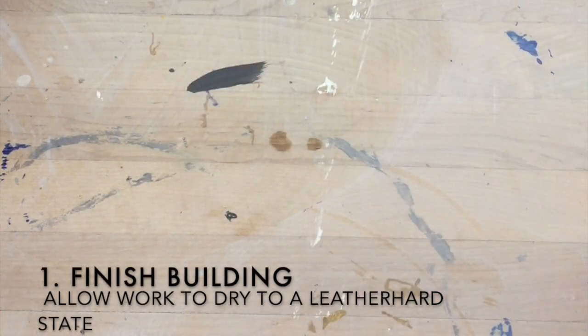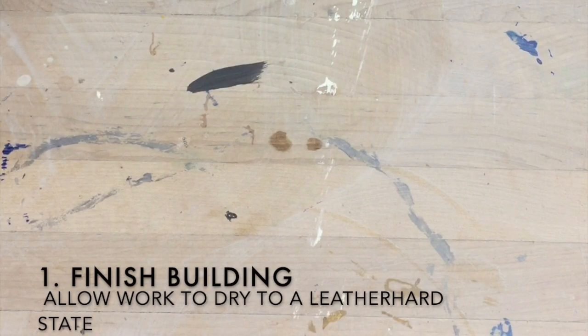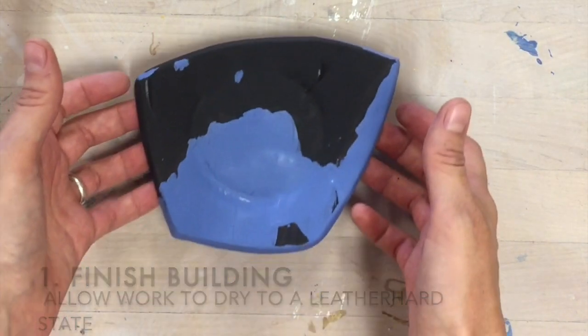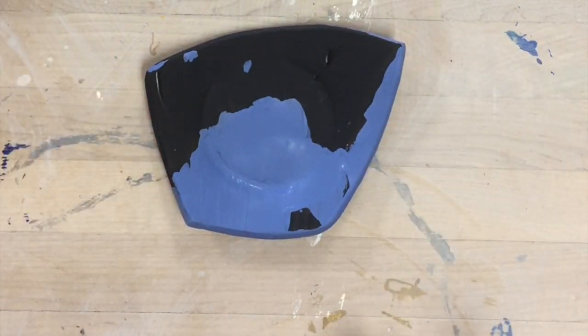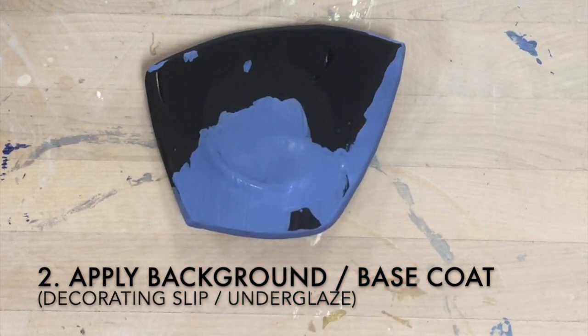So the first thing I need to do is if I want a base coat, for example I have covered this piece here with underglaze or decorating slip.